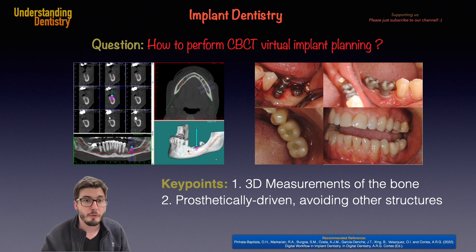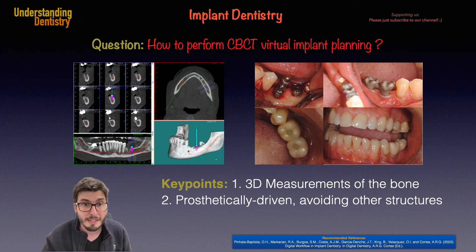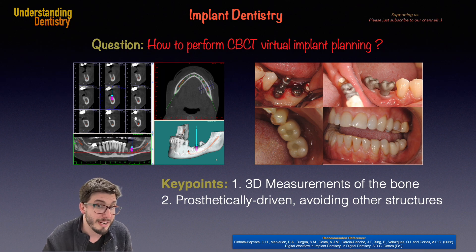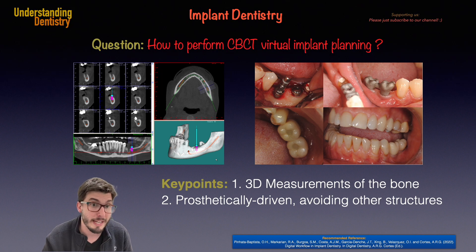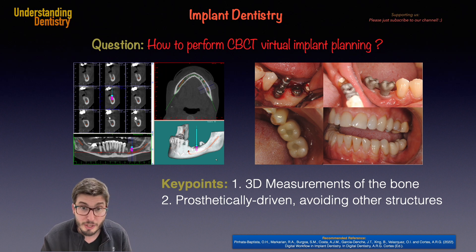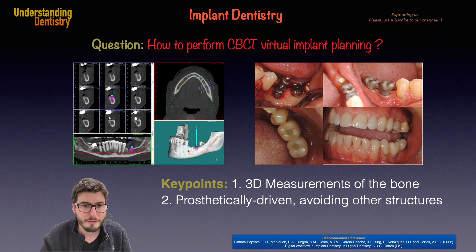For this case, two implants were planned to rehabilitate the two lower left molars. You can see the two implants placed on the alveolar crest with a conventional flap, without releasing incisions. After an osseointegration period of 6 weeks — as recommended for these tissue-level Straumann implants — we performed the impression using transfer abutments. You can see the try-in of the splinted copings, and below, the final clinical results of the porcelain-fused-to-metal implant-supported screw-retained crowns that were installed.